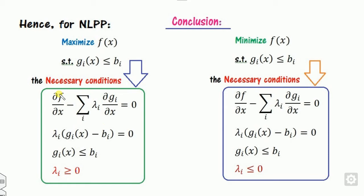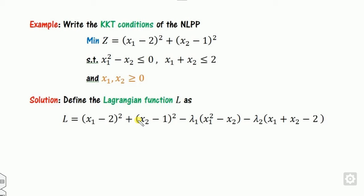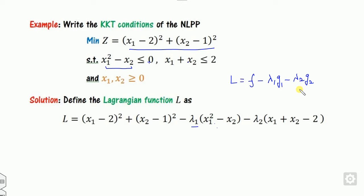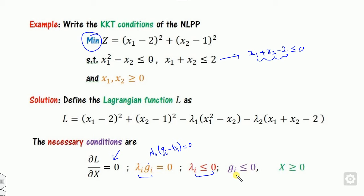We can see some examples. The first problem is a maximization problem subjected to given constraints. So you have to write the KKT conditions. First, define the Lagrange multiplier: L equals f minus lambda times the constraints. There are two constraints. g1 is x1 squared minus x2 less than 0, and g2 is x1 plus x2 minus 2 less than 0. Make sure all constraints are in less than sign form. Since my problem is minimization in this example, the necessary condition is partial derivative of L with respect to x equals zero, and lambda i times gi equals zero.